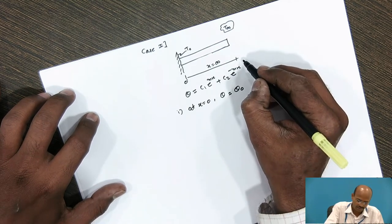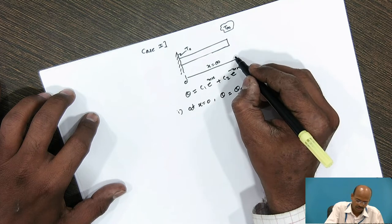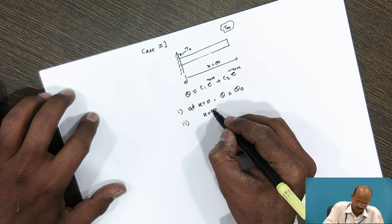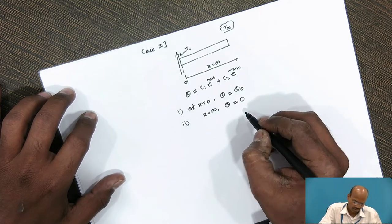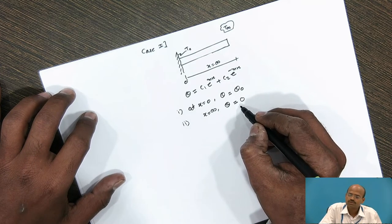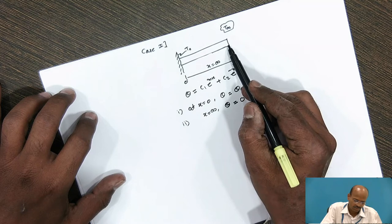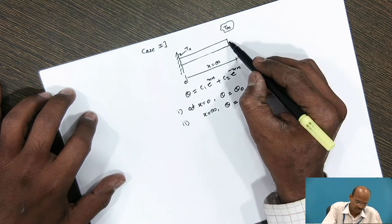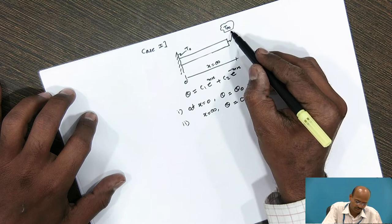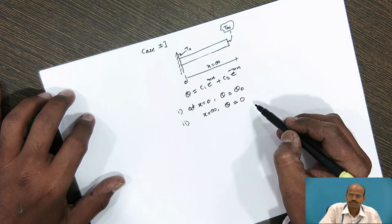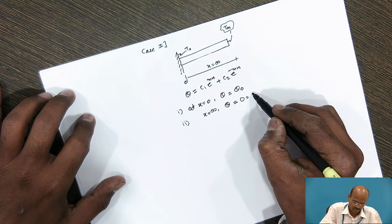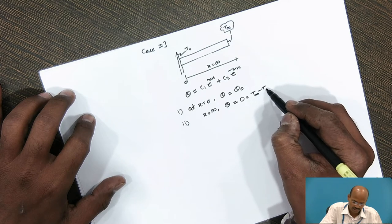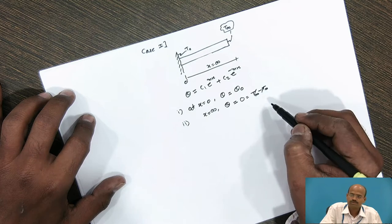The second boundary condition is: at x = ∞, θ = 0. Why does θ equal 0? For an infinitely long fin, the end temperature would become equal to the surrounding temperature, so T∞ − T∞ will become 0.